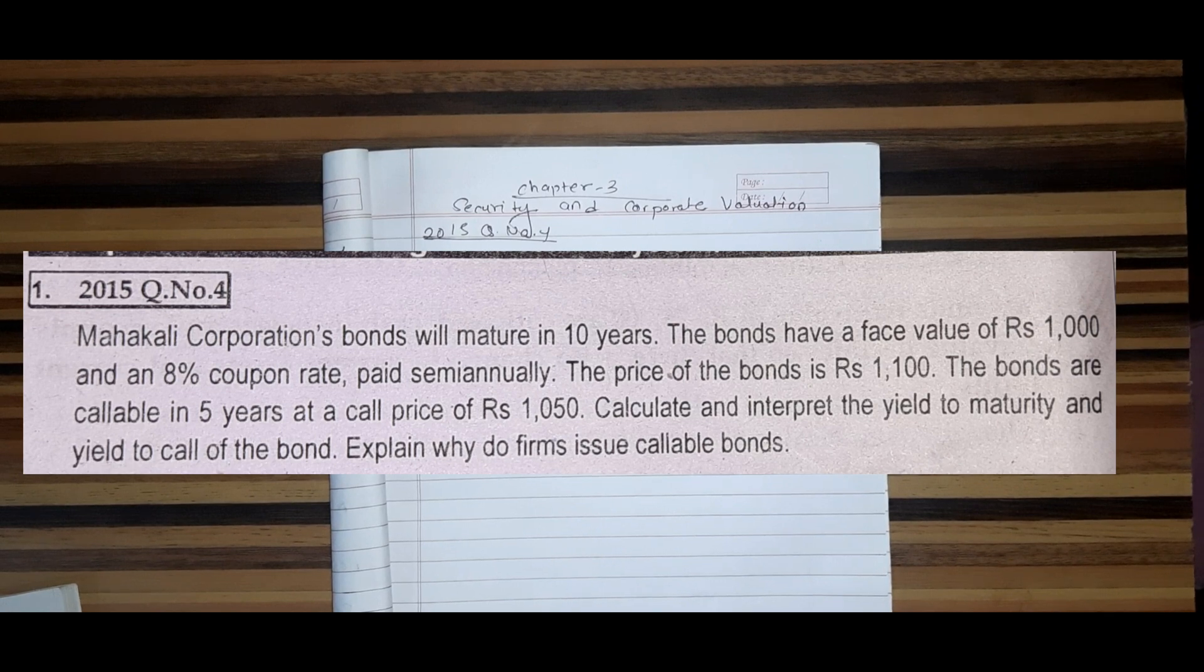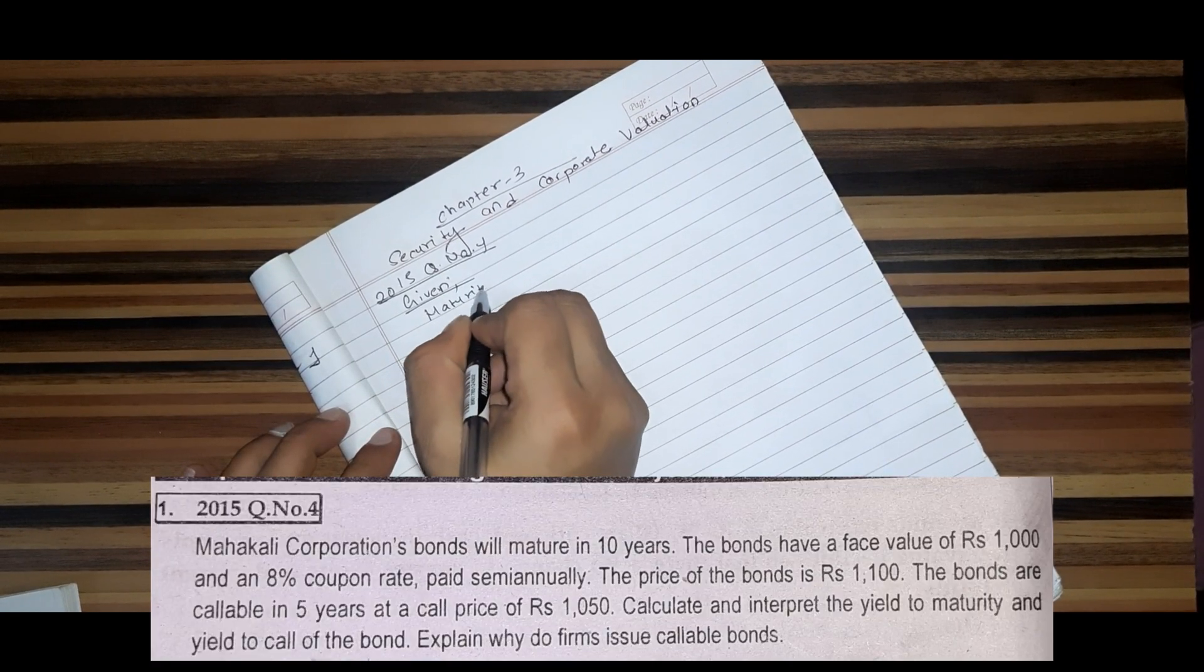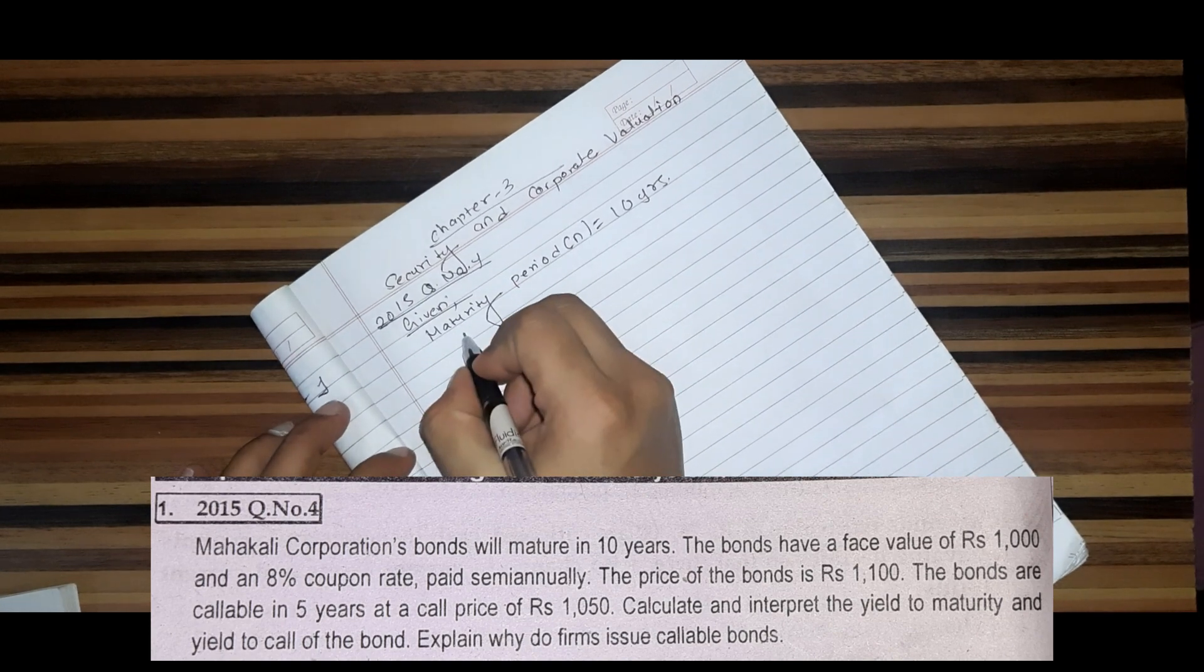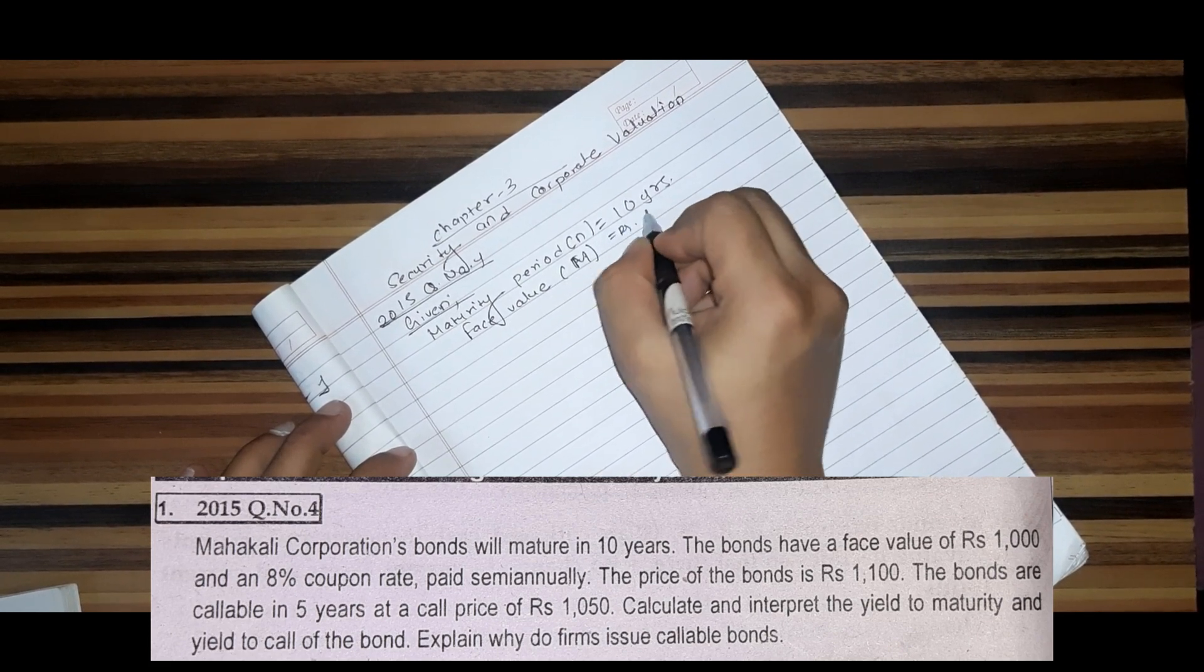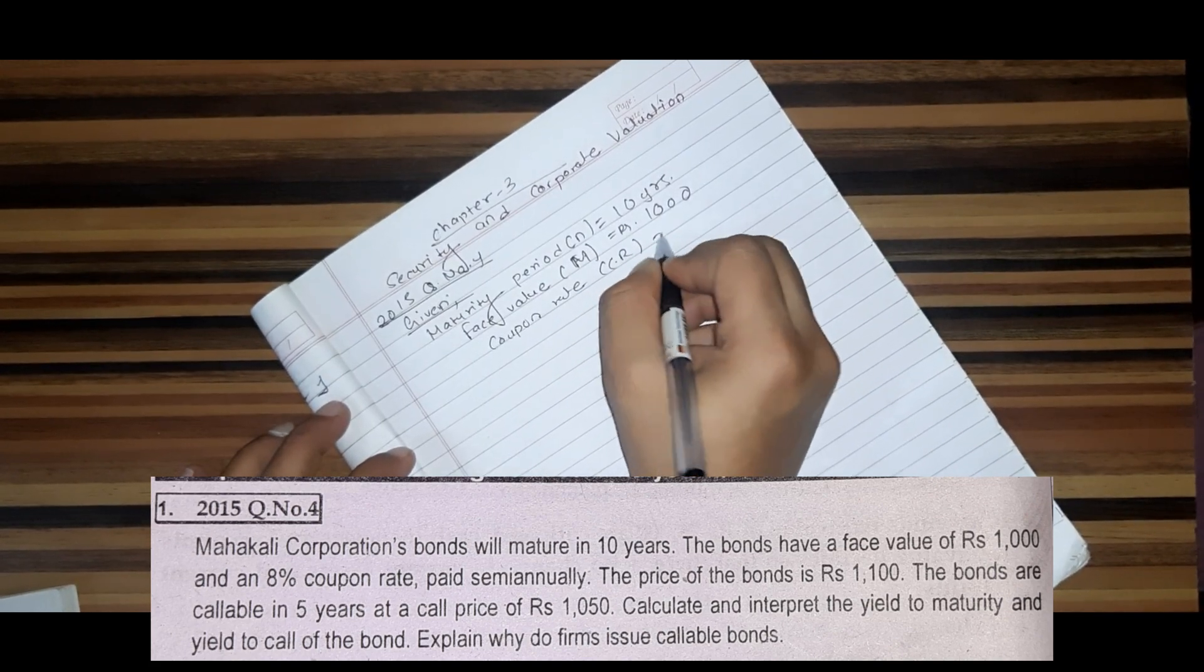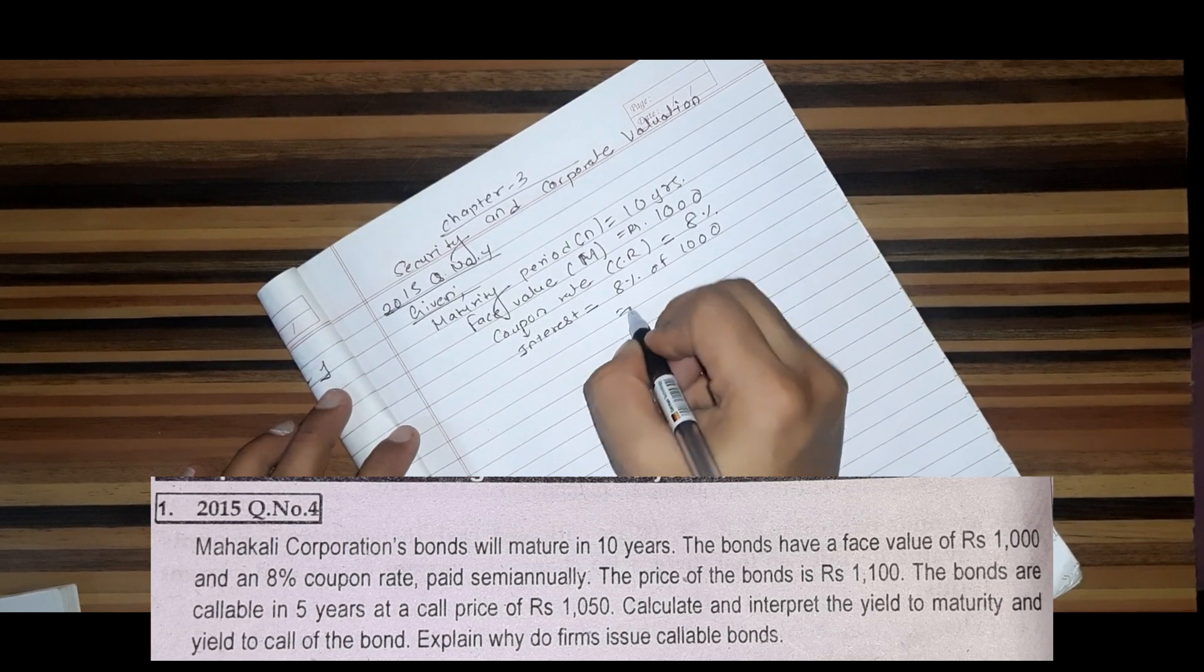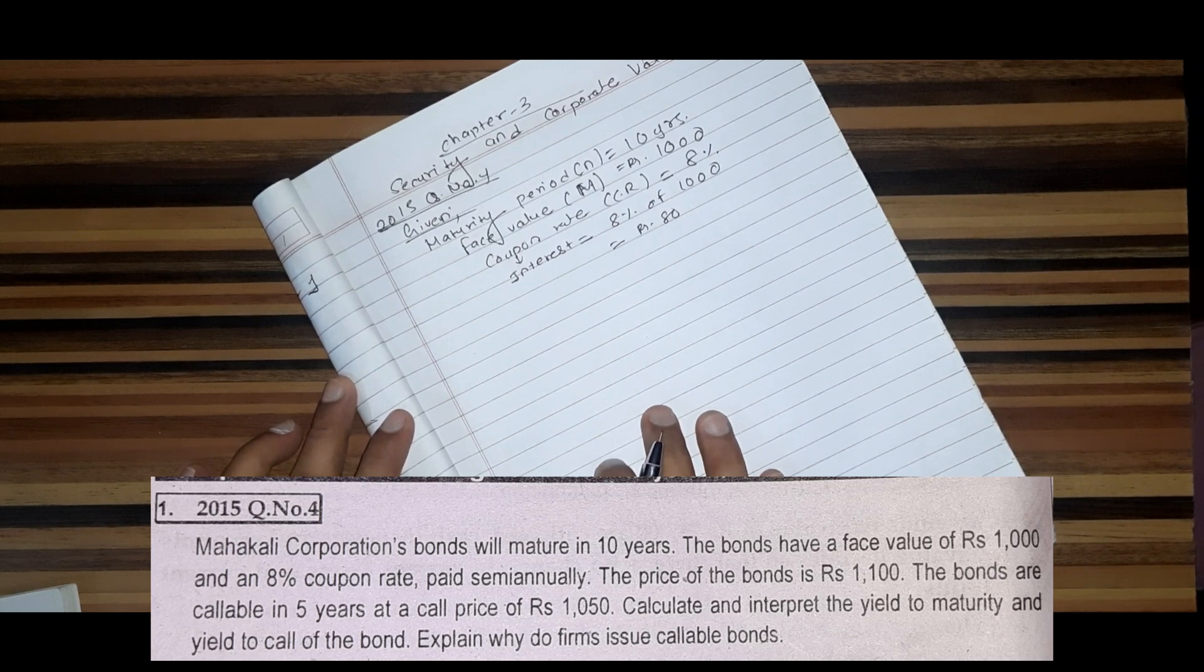The corporation bond will mature in 10 years. The bond has a face value of Rs. 1,000 and 8% coupon rate paid semi-annually. The coupon rate is equal to 8% of face value. The price of the bond is Rs. 1,100.